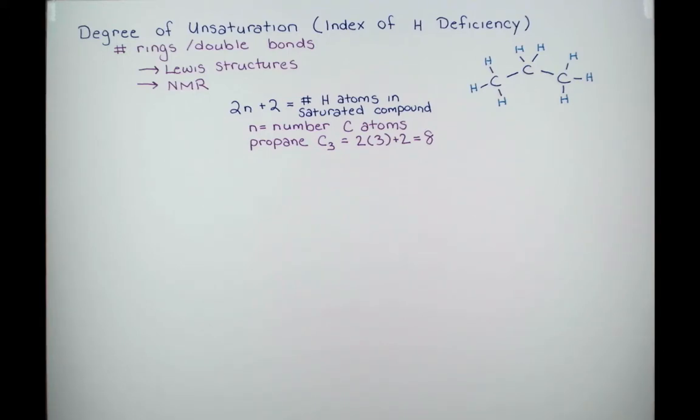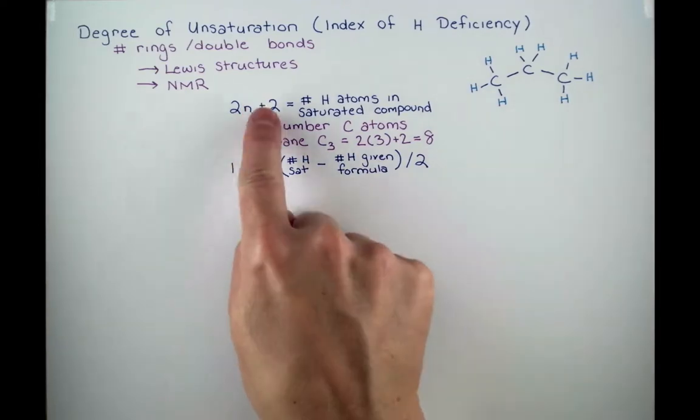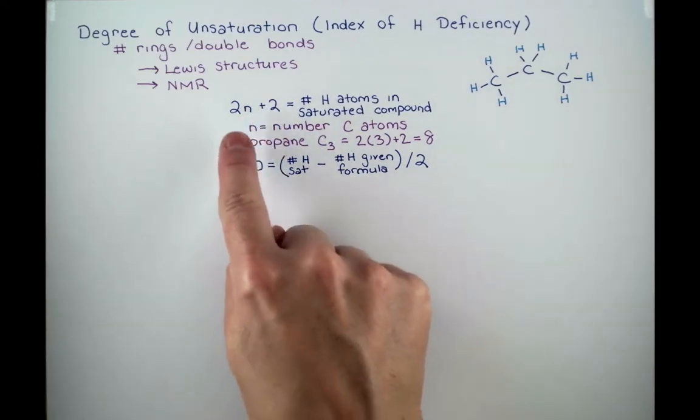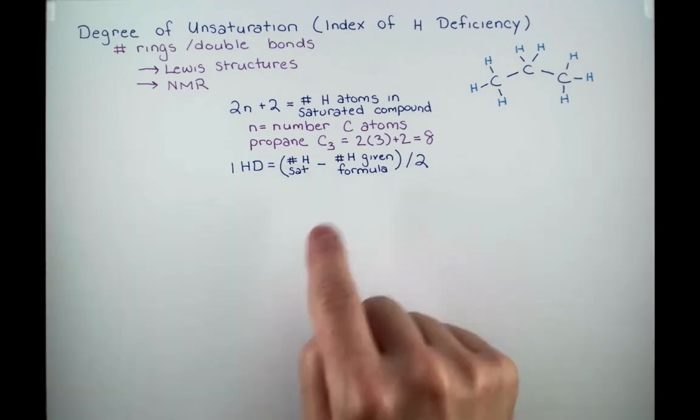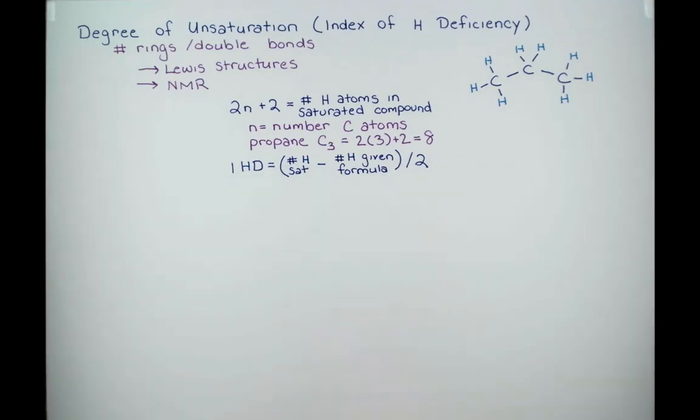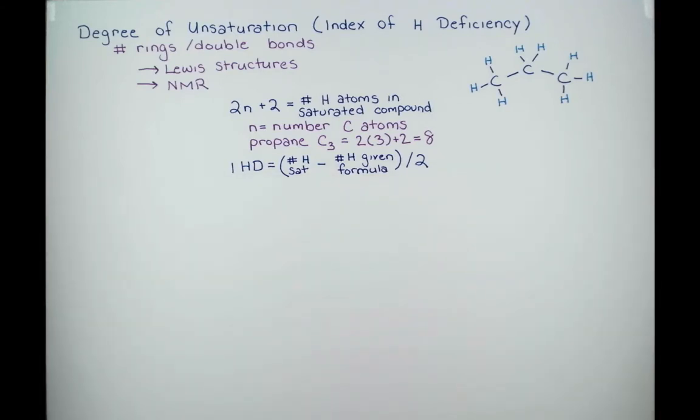Now let's write up an equation for the index of hydrogen deficiency. To calculate our index of hydrogen deficiency, we're going to first look at this formula. We'll calculate the number of hydrogen atoms in our saturated formula, and then we'll subtract the number of hydrogen atoms in our given formula. Now remember, we're losing 2 hydrogens for each double bond and each ring, so if we simply divide this by 2, this will give us the exact number of double bonds or rings in our compound.